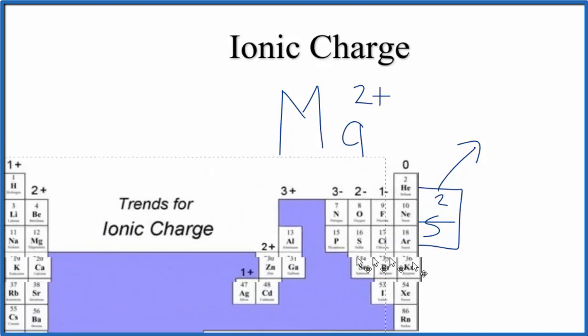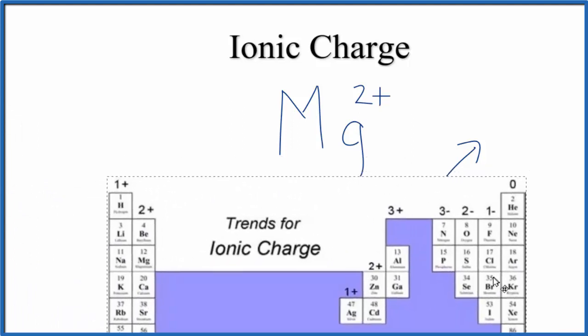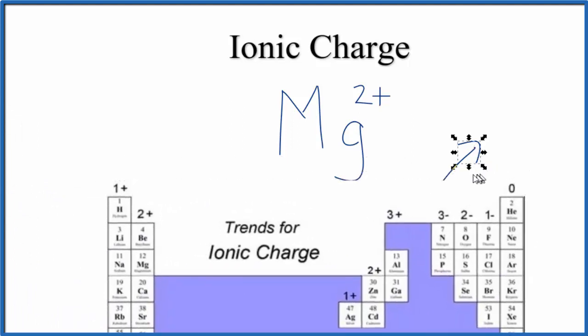So either way, you can use the periodic table to find the ionic charge for magnesium, or you can use the electron configurations. It ends up to be Mg 2 plus. This is Dr. V, and thanks for watching.